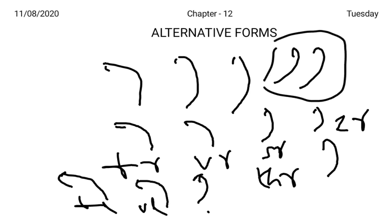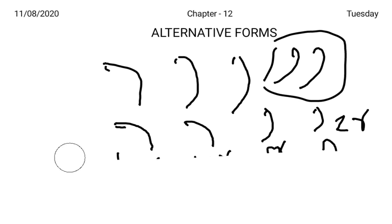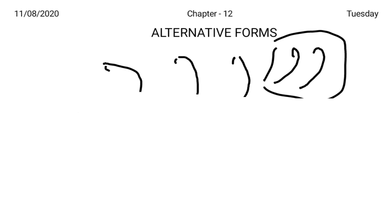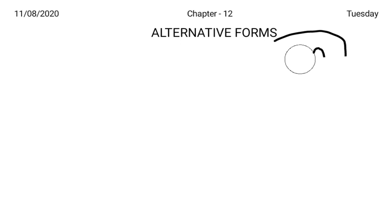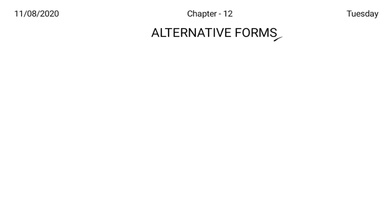In the same way, for THULL and SHELL there is no left curve, so it is always written in this form only — there is no alternate form for THULL and SHELL. Now let us see how to represent these alternative forms by way of examples.